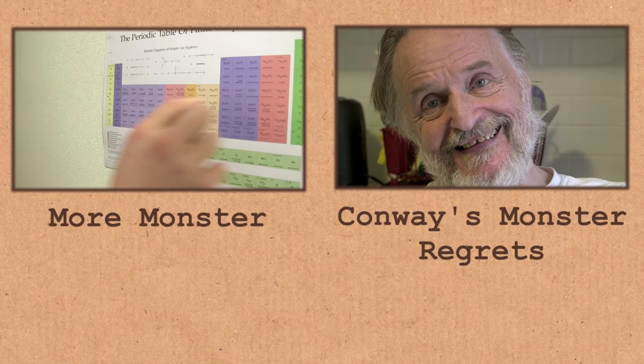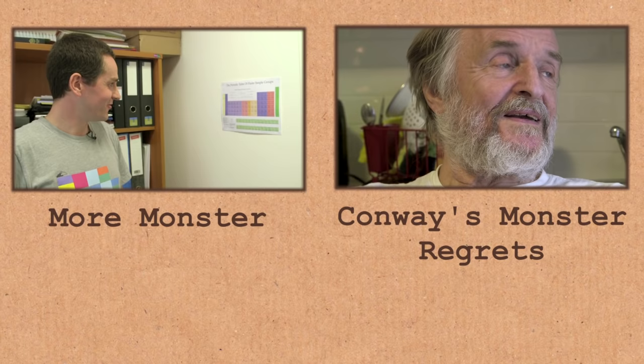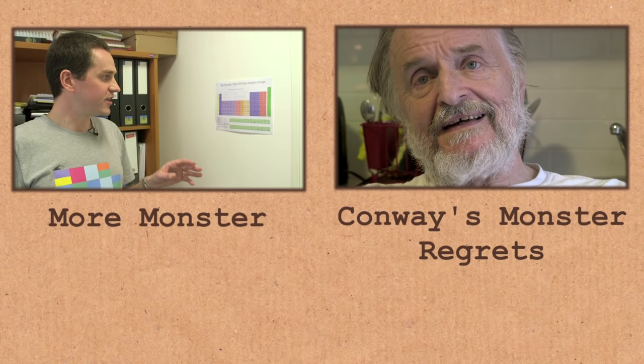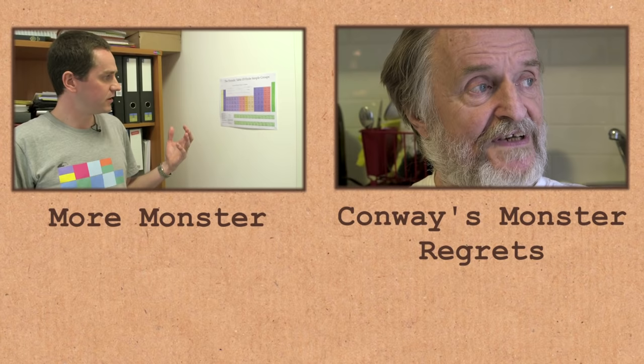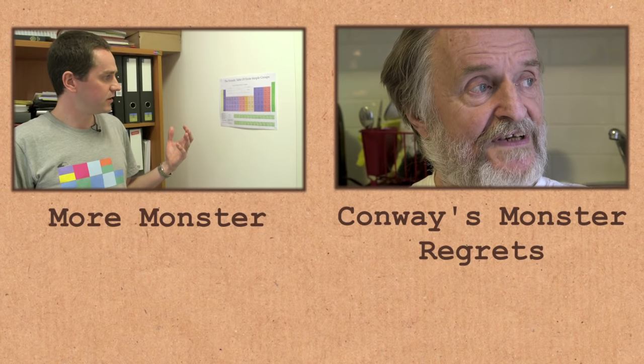You have the monster here. Then the second largest one is called the baby monster. Who discovered the monster? Not someone called monster. No, not someone called monster, actually. So the baby monster and the monster are the only ones, I think, which don't have that property. You haven't got the hope, but probably you don't care either. I care. I'd like to understand what the hell's going on. If you'll forgive me for expressing it like that.